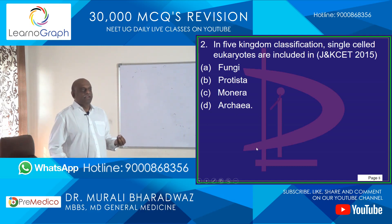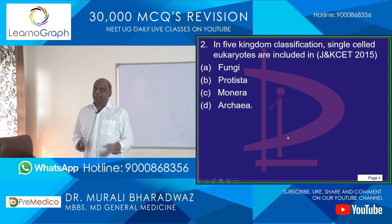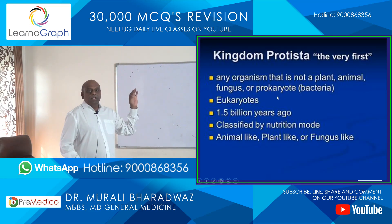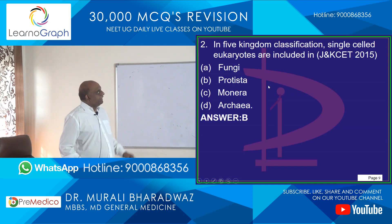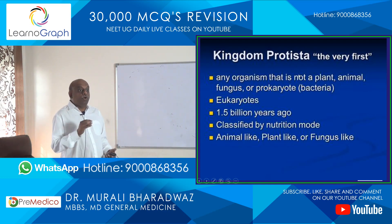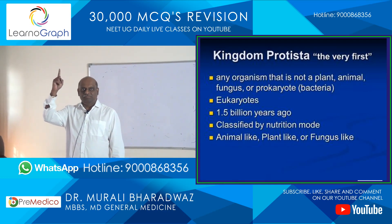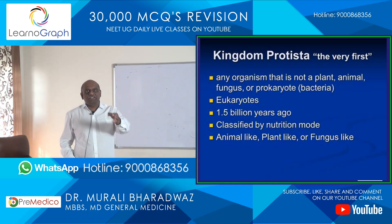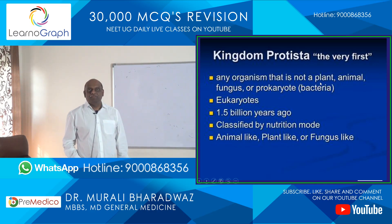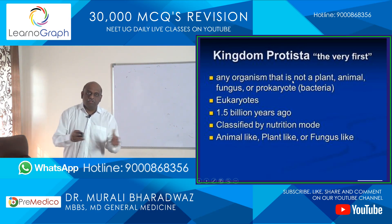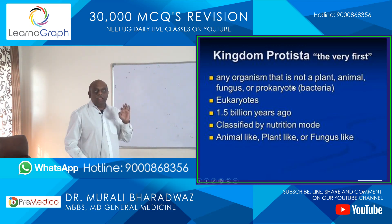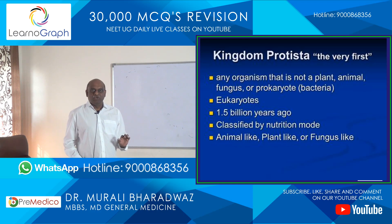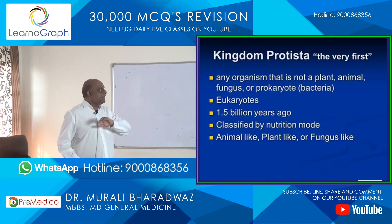Now let us talk about the five kingdom classification. If you look at the Protista — 'pro' means first, so the very first kingdom in living organisms was Protista. Any organism which is not a plant, which is not an animal, which is not a fungus, which is not a bacteria — place it in kingdom Protista.